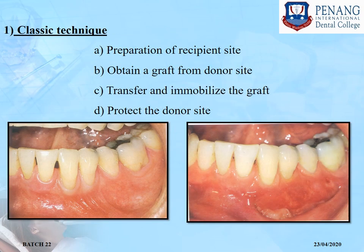Starting with the classical technique, which has four steps: first, preparation of the recipient graft bed; second, obtaining a graft from the donor site; third, transfer and immobilization of the graft; and fourth, protection of the donor site. These two photographs show pre- and post-operative views, clearly demonstrating the changes in the treated area.